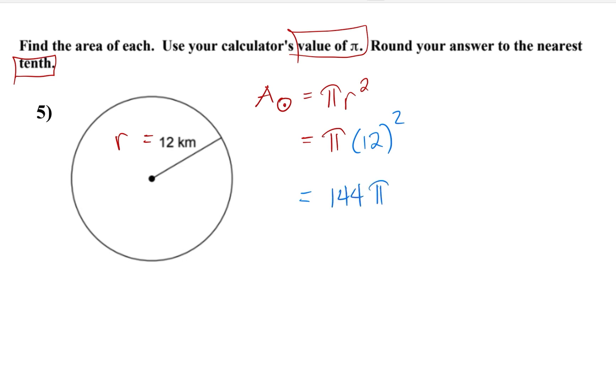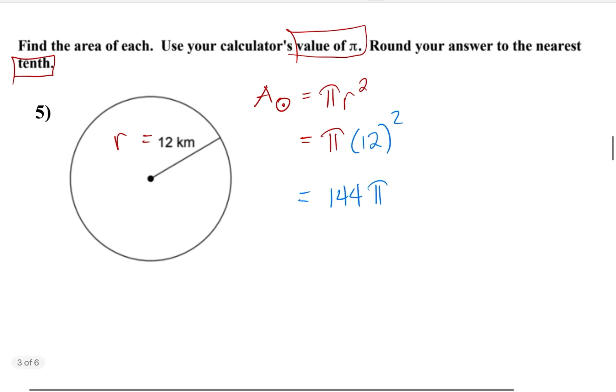12 squared is 144 times pi, and then we substitute the value of pi. We will get area of the circle which is equal to, or approximately, 452.4 kilometer square.